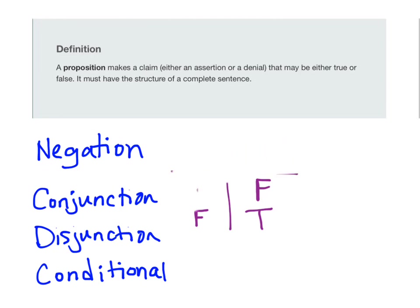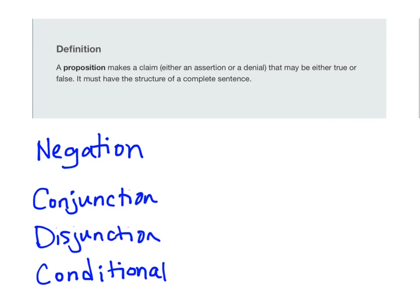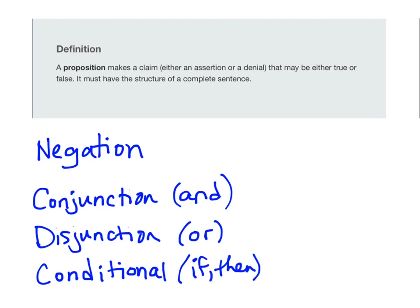These other three types of propositions — conjunctions, disjunctions, conditionals — are actually combinations of propositions. We sometimes call these compound statements or compound propositions. They are put together with connecting words: conjunctions use 'and,' disjunctions combine two or more propositions with 'or,' and conditionals use the if-then format — if one proposition, then another proposition. Since we're combining multiple propositions, there are more possibilities for whether the overall statement could be true or false.